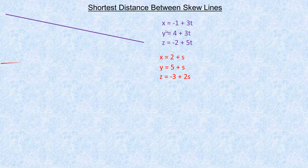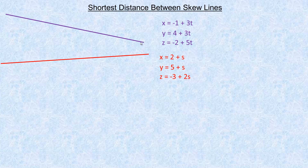This is what the skew lines look like — I've got two sets of parametric equations here. Of course you could use vector or symmetric form, but I'm going to use parametric because it's probably the most convenient. So here are my two lines. Although it may look like if I extend the red one they'd intersect at some point, this is a two-dimensional rendering of a three-dimensional picture — these lines exist in three-dimensional space.